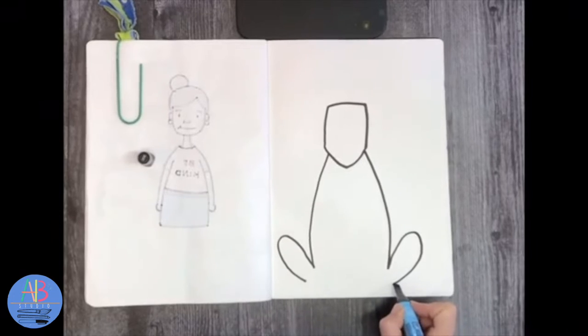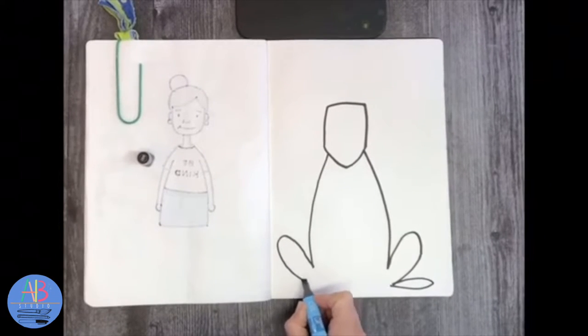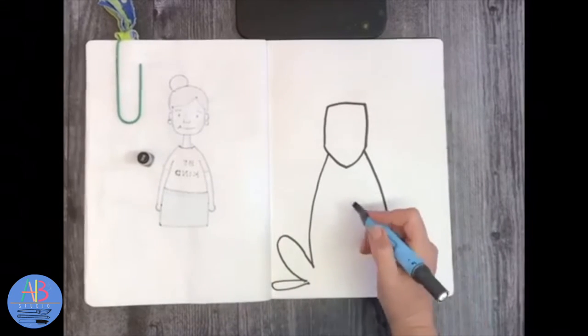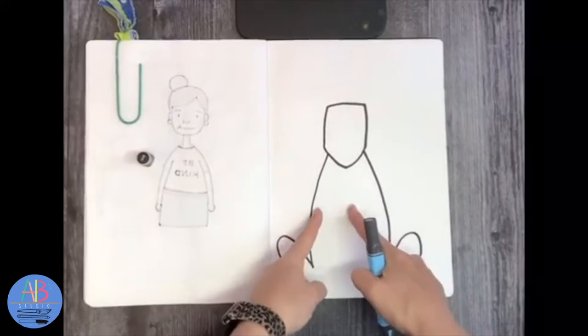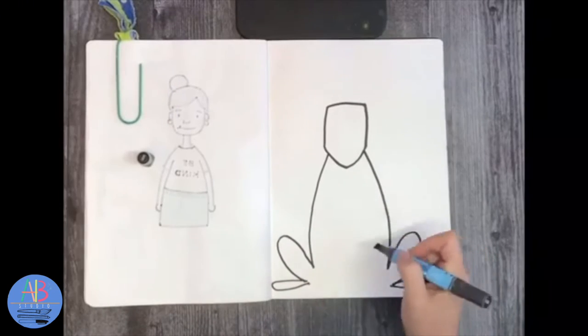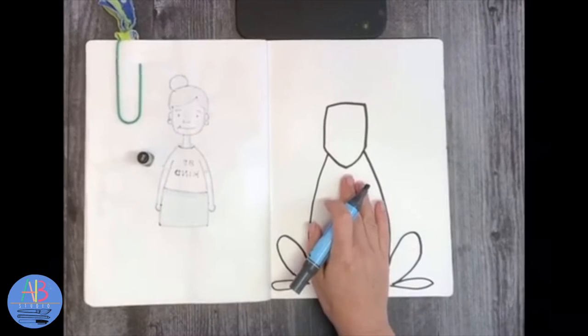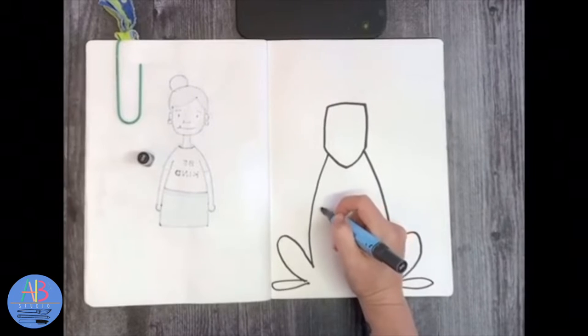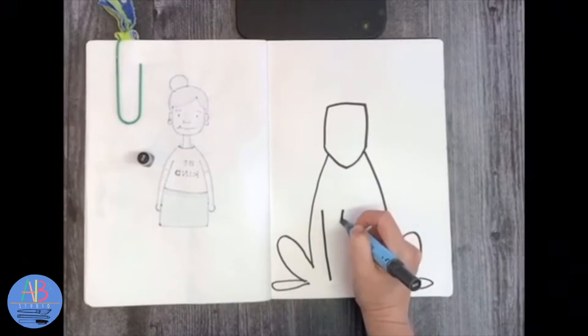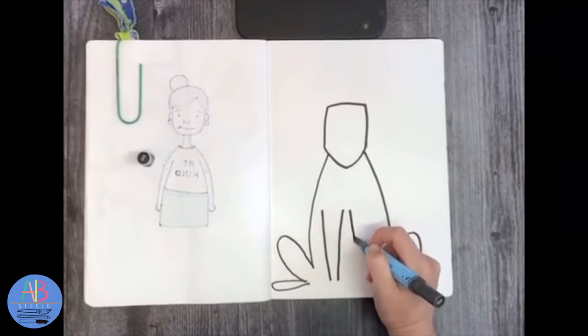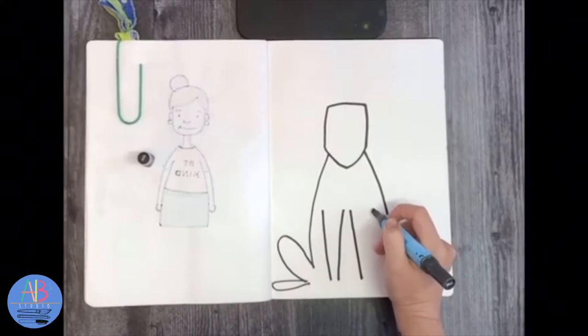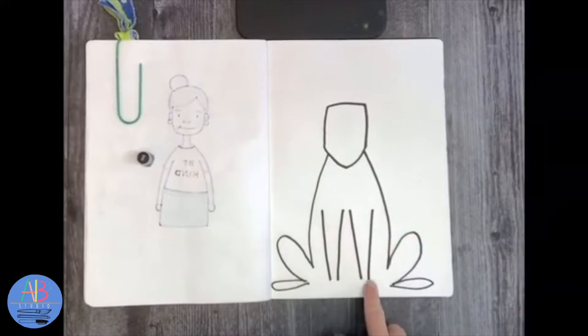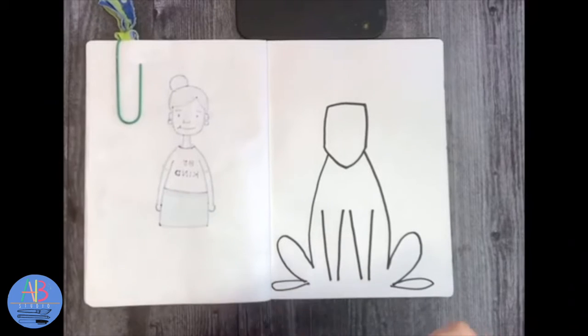So that would be step one and step two. Step three includes adding the paws, which is just like a sideways oval, and then we're going to be adding the front two legs here. And they kind of come wider at the top and skinnier as they come in the bottom. I don't want to start too close to underneath the chin. I'm going to come down about midway of his body. So wider and smaller, wider and smaller.